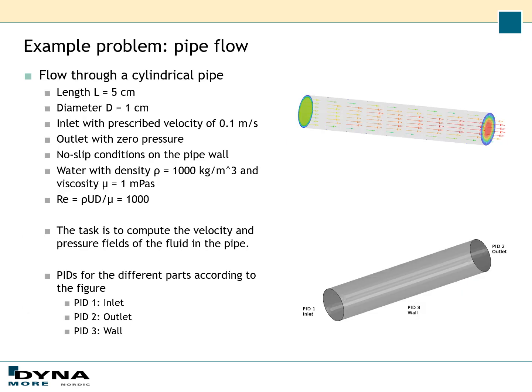We consider the classical problem of a fluid flowing through a cylindrical pipe. The pipe has a length of 5 cm and a diameter of 1 cm. At the inlet we prescribe a velocity of 0.1 m per second, whereas at the outlet we prescribe a zero pressure. For the pipe wall we have a no-slip condition, and the fluid flowing through the pipe is water with a density of 1000 kg per cubic meter and a viscosity of 1 mPa·s.